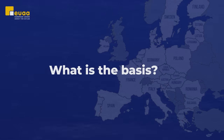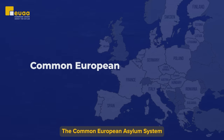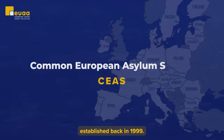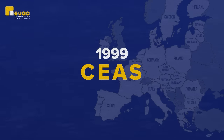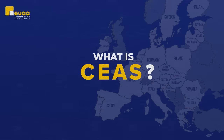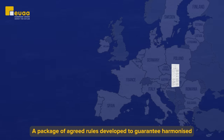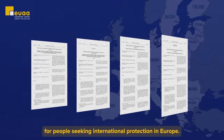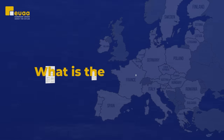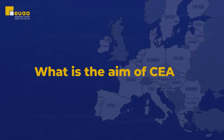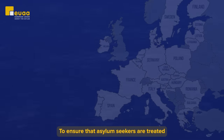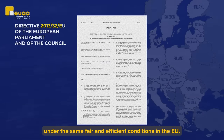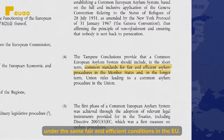What is the basis? The Common European Asylum System (CEAS), established back in 1999. CEAS is a package of agreed rules developed to guarantee harmonized and uniform standards for people seeking international protection in Europe. The aim of CEAS is to ensure that asylum seekers are treated under the same fair and efficient conditions in the EU.